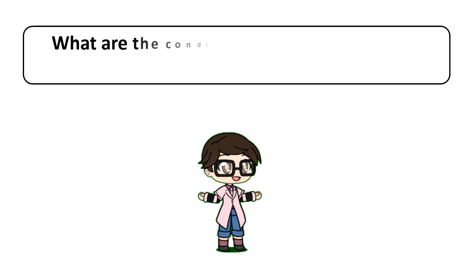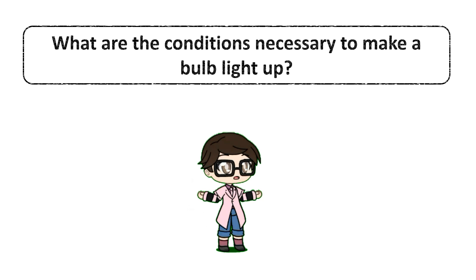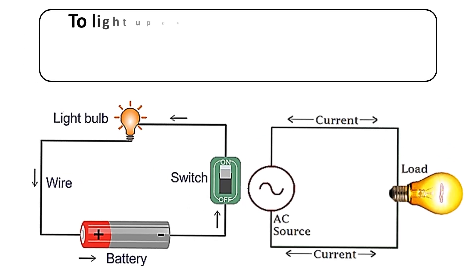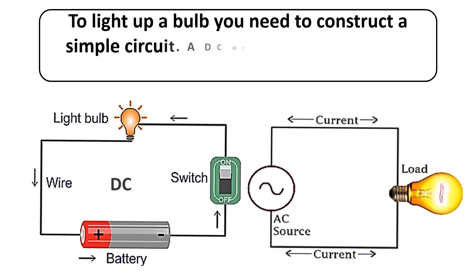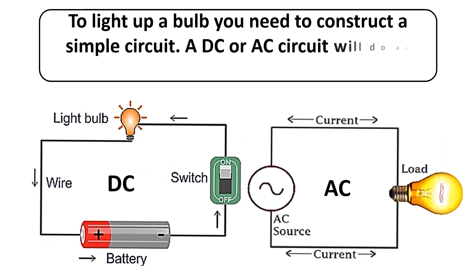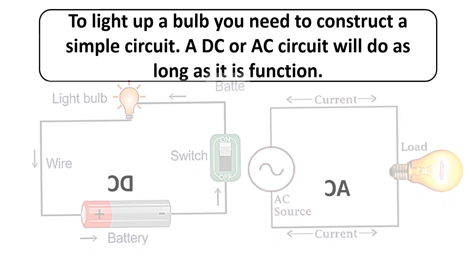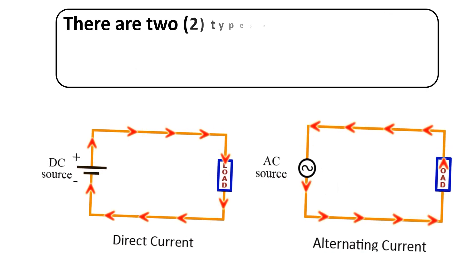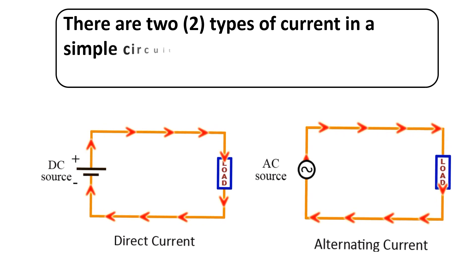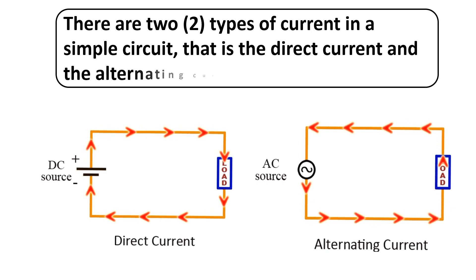What are the conditions necessary to make a bulb light up? To light up a bulb, you need to construct a simple circuit. A DC or AC circuit will do as long as it is functional. There are two types of current in a simple circuit: direct current and alternating current.